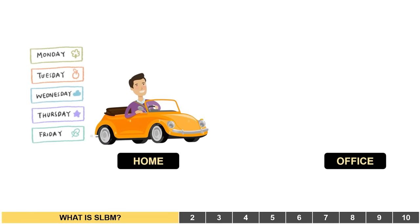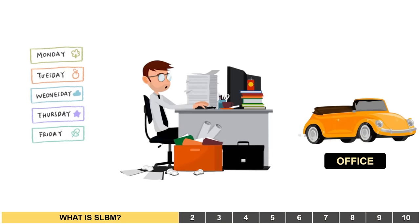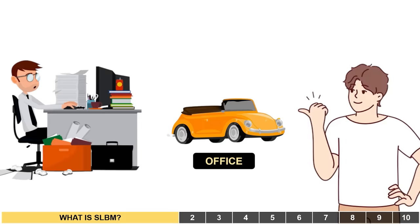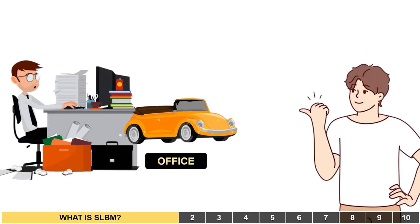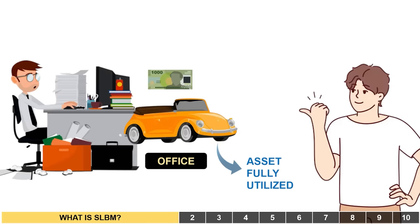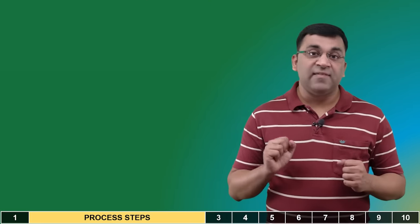During working days the utility of a car is to drive you from home to office and back. When you're at work the asset is simply lying idle. But let's say a friend comes with a proposal: he collects the car after you've reached your office, uses it as a taxi during the day, and returns it in the evening with a daily rental fee. The car gets fully utilized, you're happy with the extra cash, your friend earns income too — and this is what SLBM does in its most simplified form.